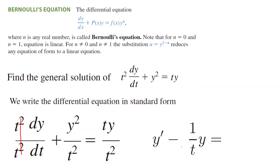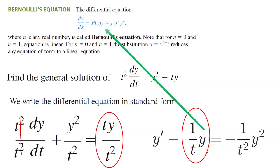On the right-hand side you end up with negative y squared divided by t squared. The reason for this rearrangement is to match the exact form of Bernoulli's differential equation. As you can see, n is equal to 2 — the power or exponent of y is 2.